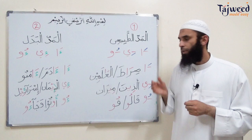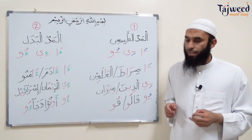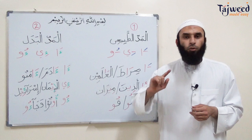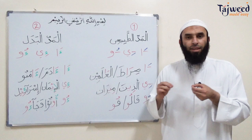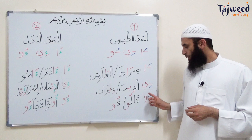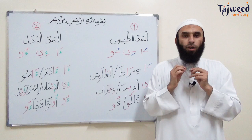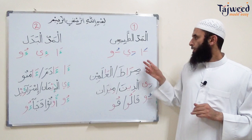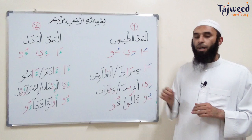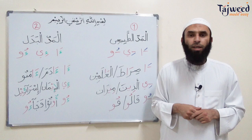Ya with sukun preceded by a letter with a kasra — for example, al-ladhina, or the word mizan. With al-ladhina, the letter dhal with one count would be dhi, so two counts is dhi-dhi — al-ladhina — or mizan. And wa with sukun preceded by a letter with a dhamma — like qalu: the qaf has a dhamma, so we put our lips forward — qoo — two counts — qalu. This is mad al-tabi'i: two counts whenever we find one of the three letters of mad in the appropriate context inside the word.